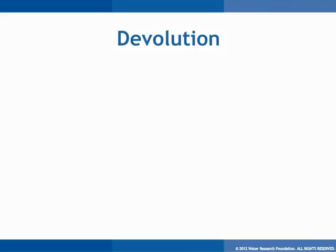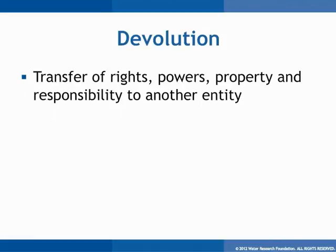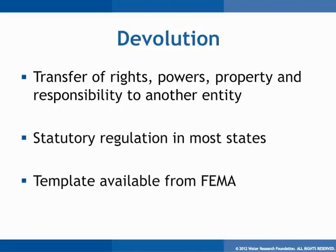Devolution is described in Section 10 of the BCP Guidance Manual as follows: if all of the best planning efforts are not sufficient, and administration, rights, powers, property, and responsibility must be transferred to an outside entity, the utility is disintegrating or devolving due to the crisis caused by an unmanageable incident. In most utilities, the procedures for devolution are provided by state statutory regulations. You should consult your state emergency planning department, emergency management association, or legal advisors for interpretation and procedures under your specific state statutes protecting public health. The BCP should provide direction for orderly transfer as prescribed by statute should the need arise.